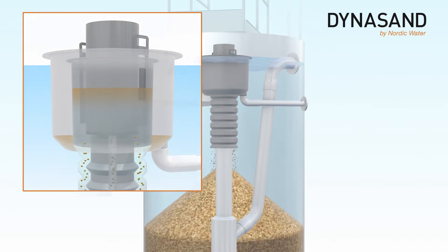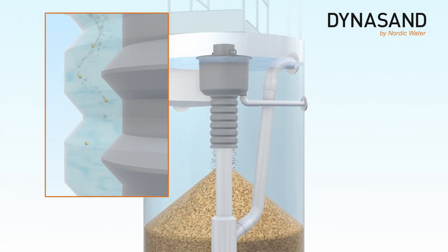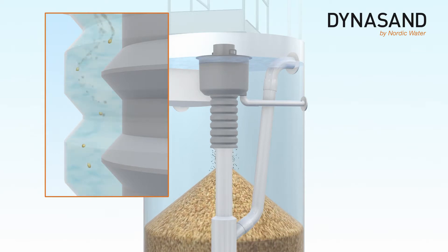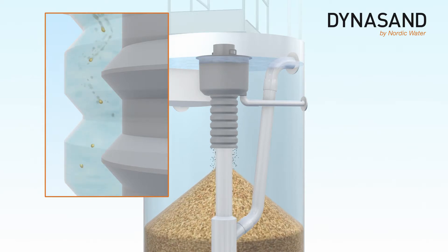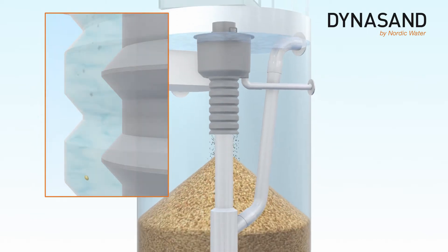While the media falls through the sand washer in a whirling motion, it meets an upflow of clean filtrate used as wash water. The impurities are thereby separated from the media and carried away in the wash water flow.